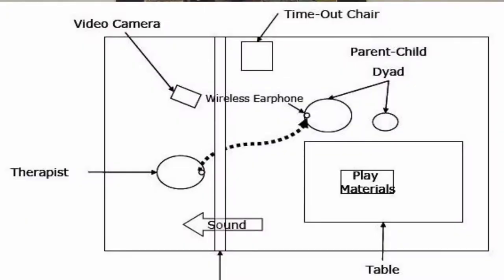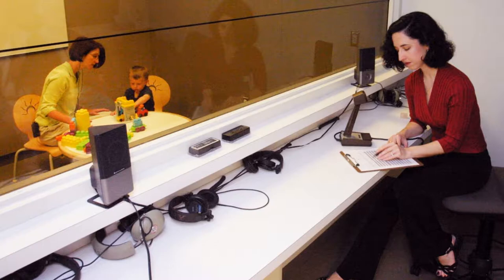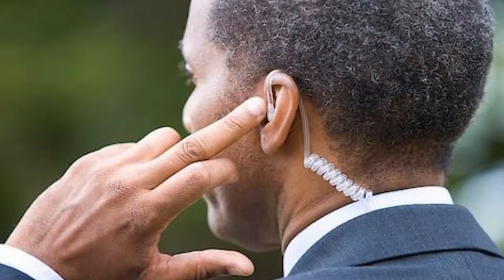You also want to have a buffer room, which is considered the timeout area. There is a timeout chair within the room, and the buffer room is for whenever the timeout chair doesn't work. There is another room with a one-way mirror, and the therapist sits in that room and observes the parent and child interacting.